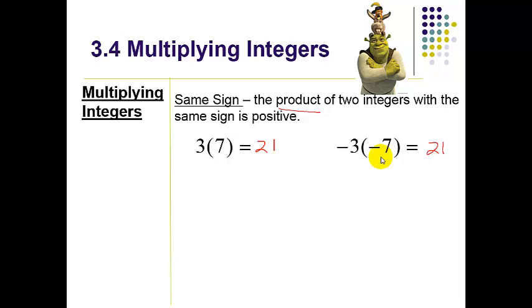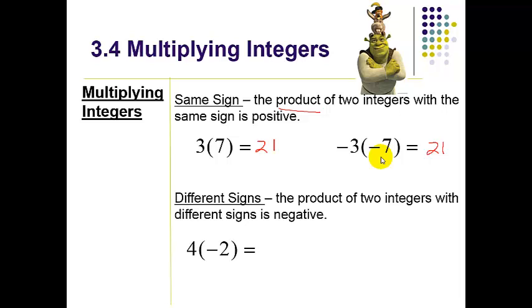And then your other situation you're going to come across is that they're different signs. So the product of two integers with different signs is negative. So 4 times negative 2—if you had four groups of two guys in each group, you're going to have a total of negative 8. And again, different signs: negative 4 times 2 is going to give you negative 8.